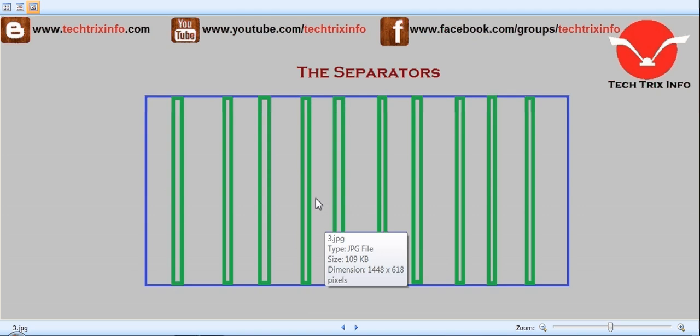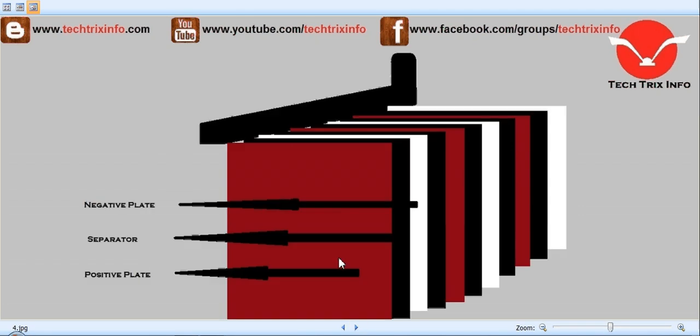In an Exide battery, they use Parawik microporous PVC separators for this particular function. These plates are made into a group, as you can see on the screen.